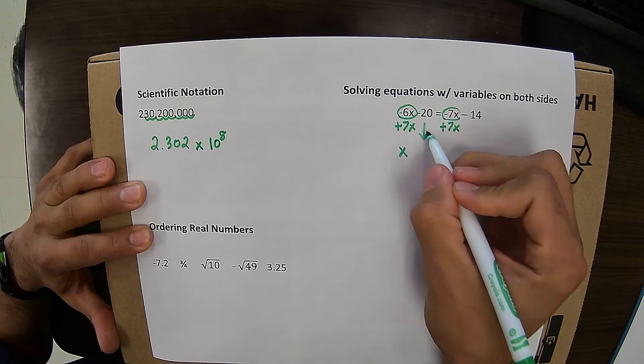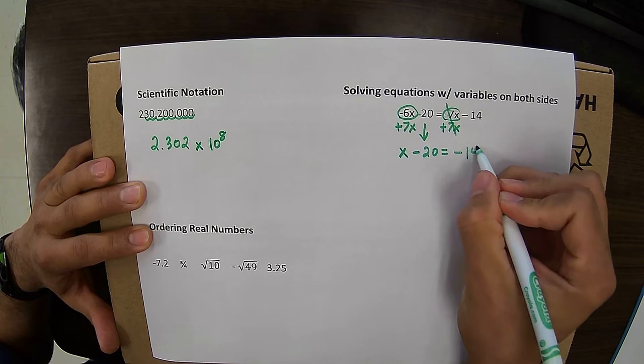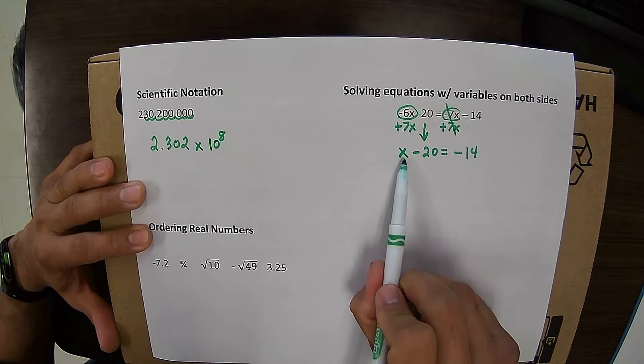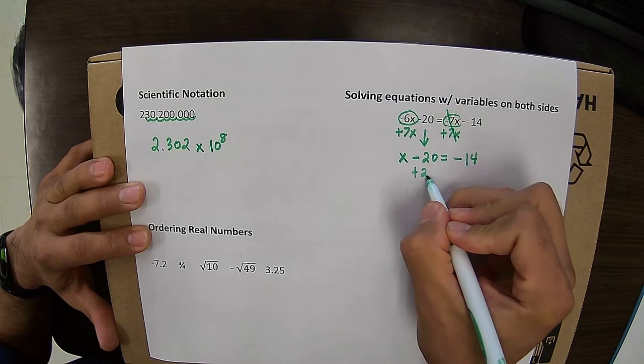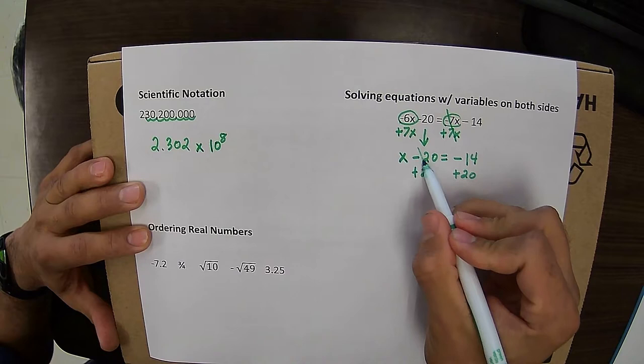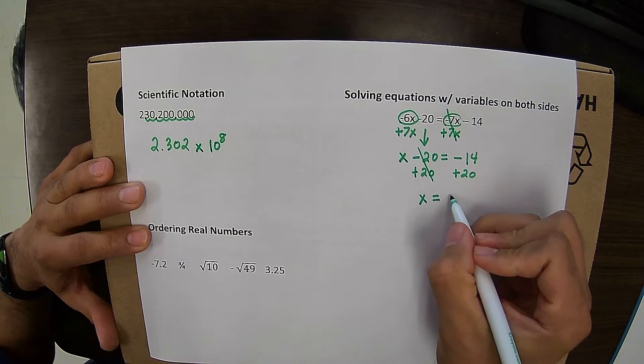So now I'm going to bring down the minus 20. Bring down my equal sign. The minus 7x and the plus 7x cancel like we wanted. Bring down the minus 14. Now I'm down to a two-step equation. You're always trying to get the x variable by itself. That means that's the only thing on one side of the equation. So that means we need to cancel out this minus 20. So to do that, I would add 20. If I do it to one side, I have to do it to the other. So now the 20s would cancel. So now I've isolated the variable or have x by itself. Over here, negative 14 plus 20 is going to give me 6. So x would equal 6.